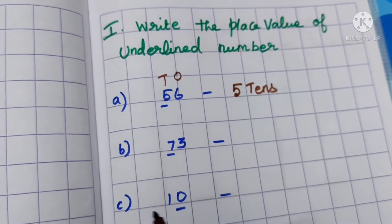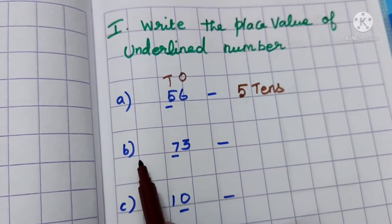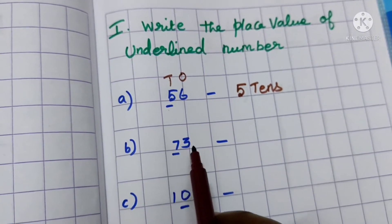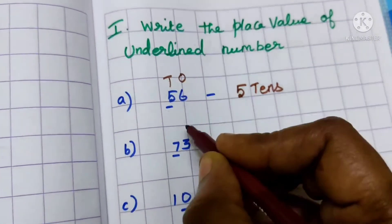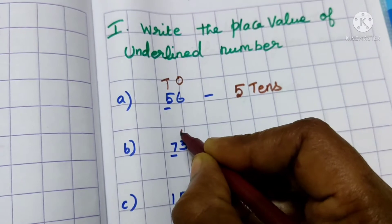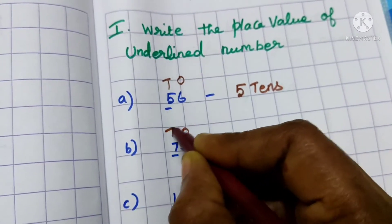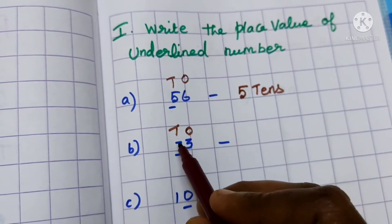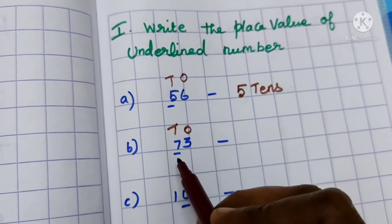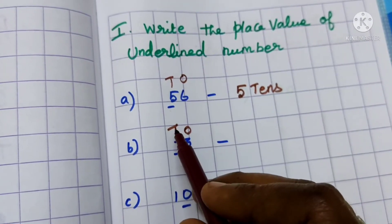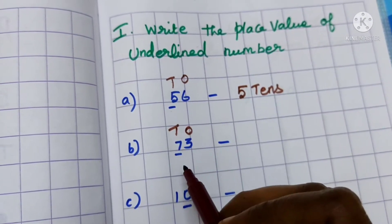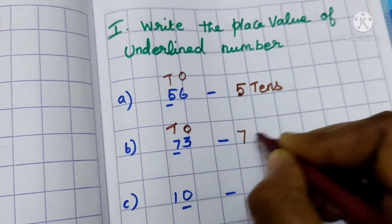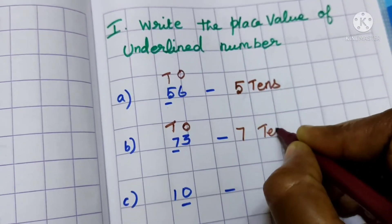Okay children, next. Number B1: 73. Put the place value here also — 1's and 10's. Here we have 7 underlined. So what is the place value? It is T, the 10's place. So here, 7 tens.